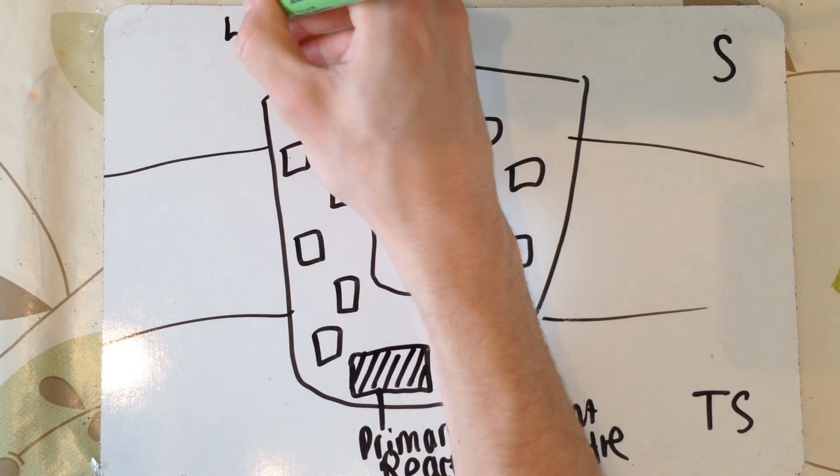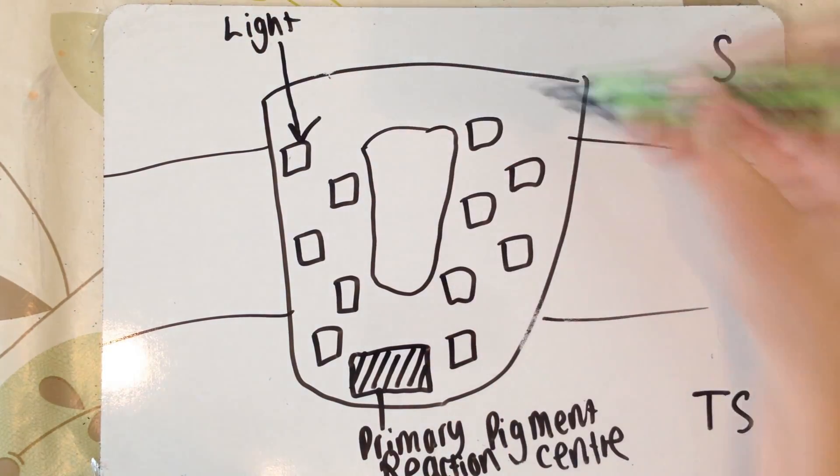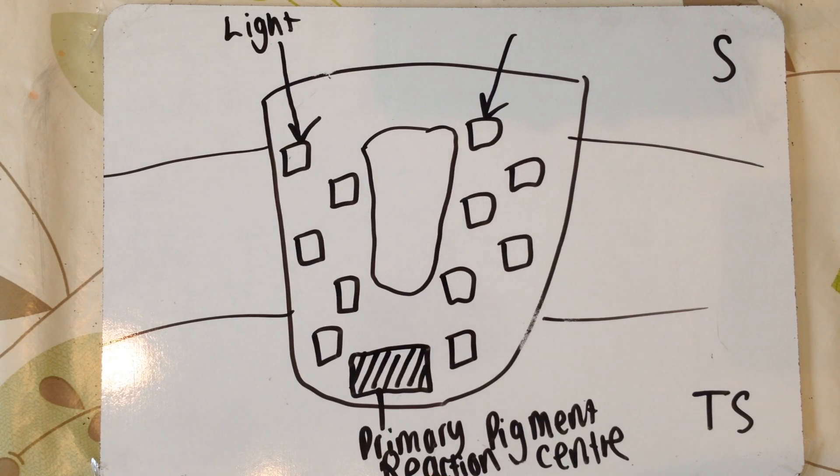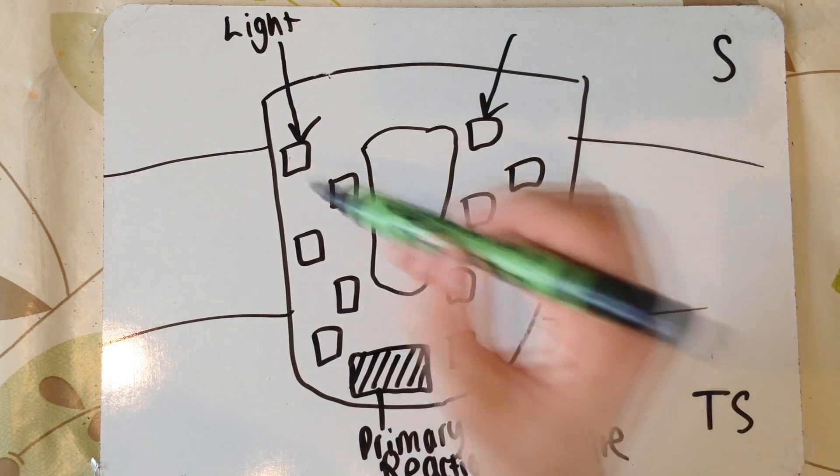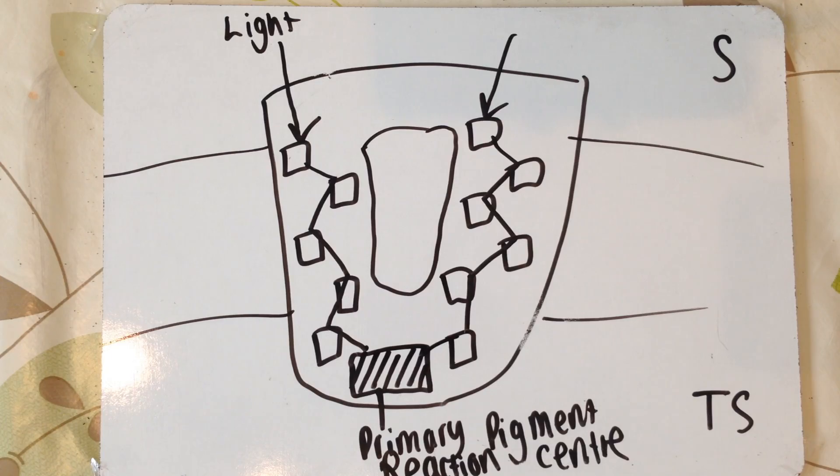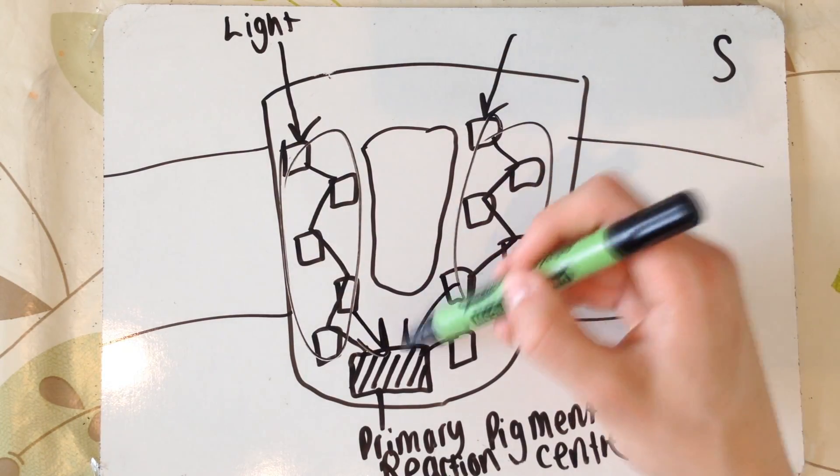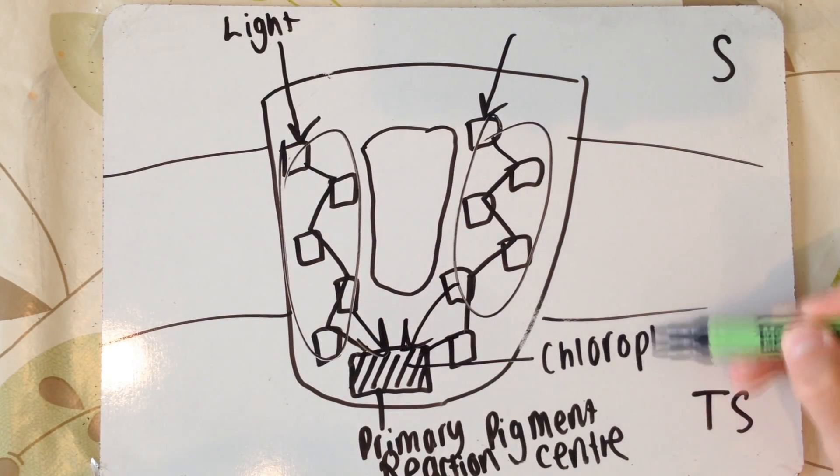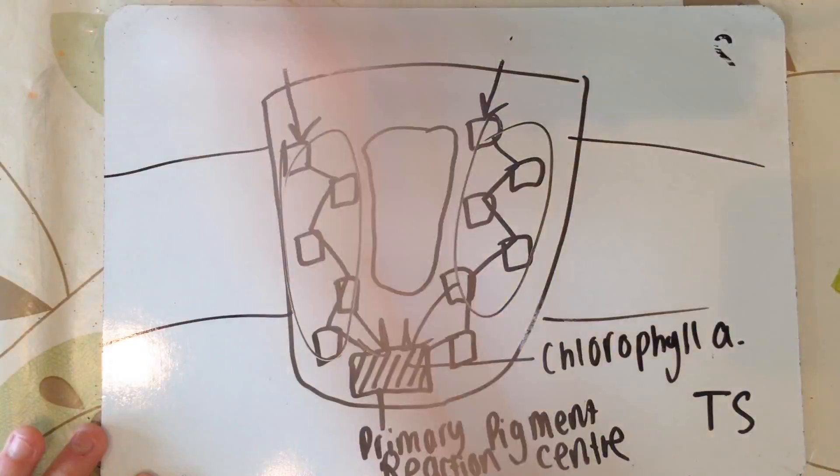What happens is light strikes basically each and every photosynthetic pigment. This includes the reaction center at the bottom, but the ones at the top all share their energy and the energy gets passed along right to the very bottom of the primary pigment reaction center, which here excites a pair of electrons. Basically, all the energy is passed on to our chlorophyll A structure.